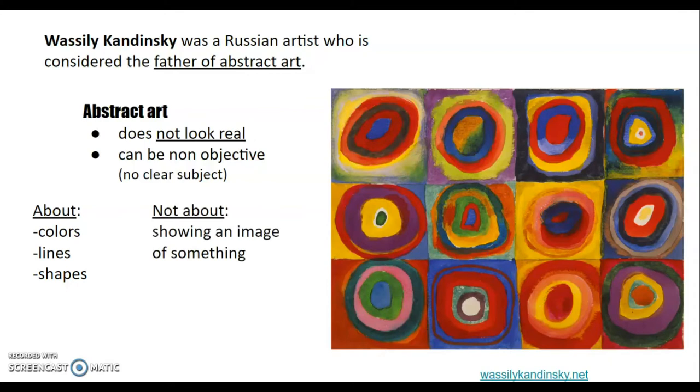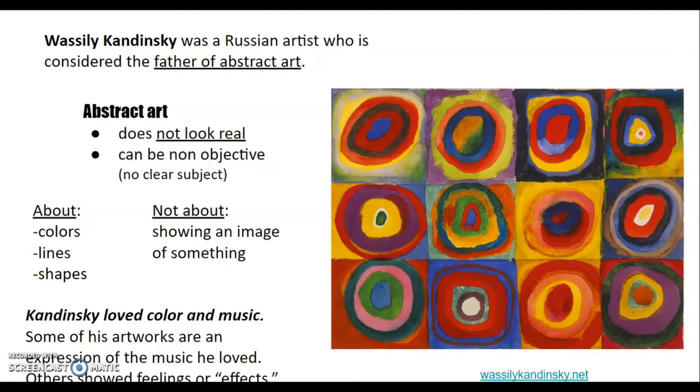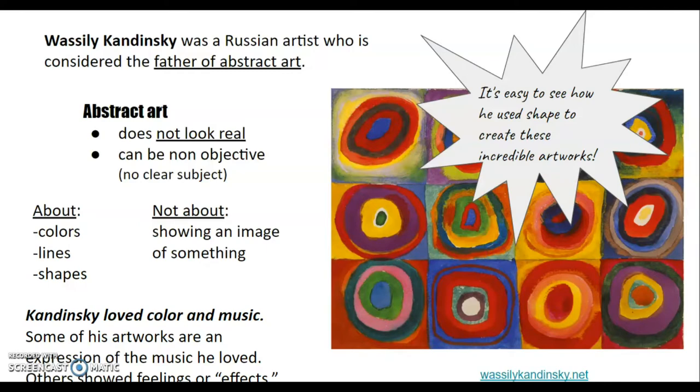Abstract art is about colors, lines, and shapes. And it's not about showing an image of something. Kandinsky loved color and music, and some of these artworks are an expression of the music that he loved. So he would listen to music and he would try to paint the things that he heard. Other paintings that he made showed feelings or effects. It's easy to see how he used shape to create these incredible artworks.